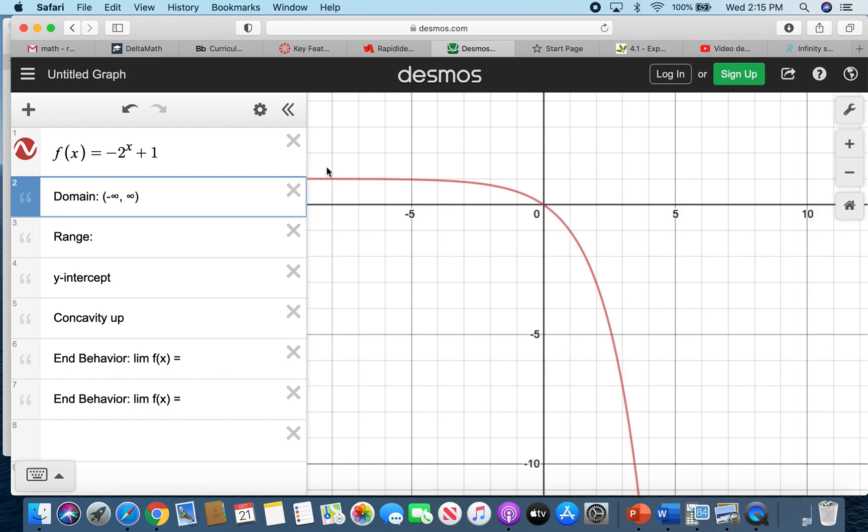Now the range depends upon our horizontal asymptote. In this case it's y equals 1, so it's going to be 1 to negative infinity because the graph goes down. So from positive 1, it goes down.